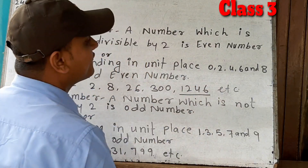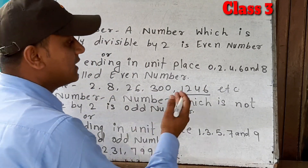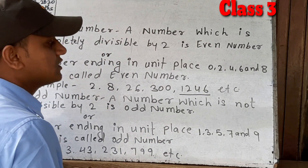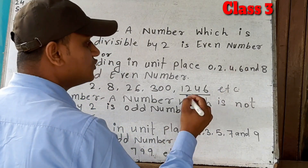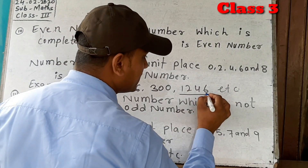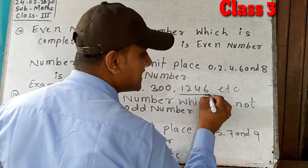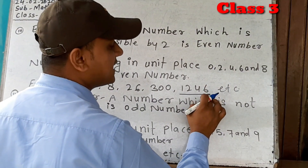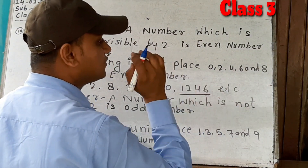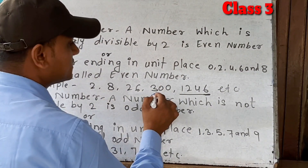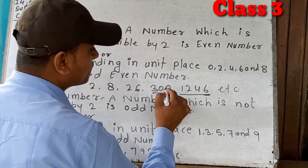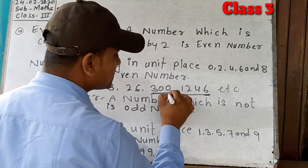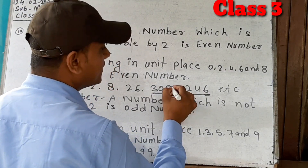For example, 1246 — to know if it is even or odd, we look at the unit place. The unit place here is 6, and since 6 is in the set {0, 2, 4, 6, 8}, it is an even number. Similarly, 300 — its unit place is 0, so it is also called an even number.